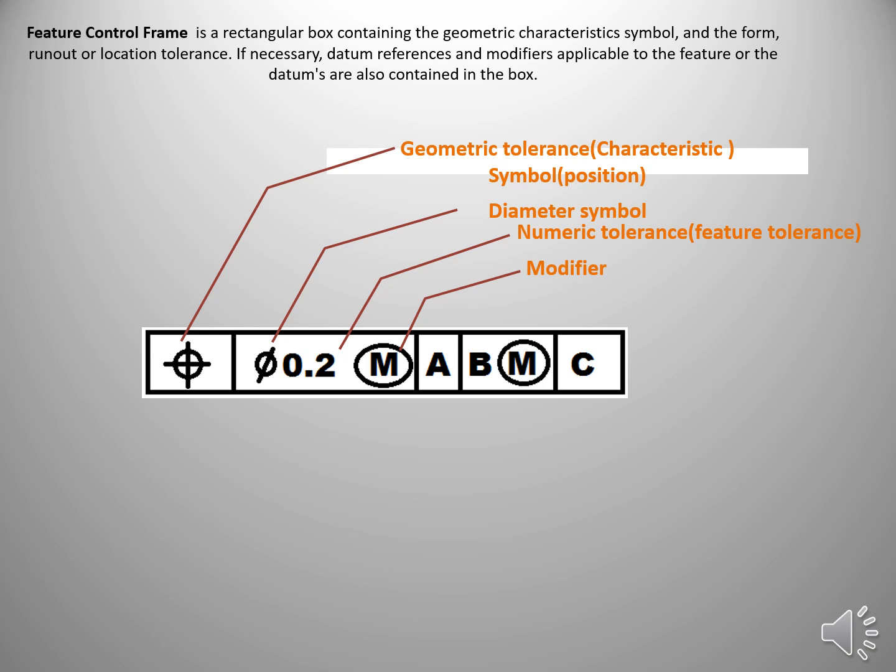This is also a big topic. In Modifier, we have different types of Modifier and we have to understand Bonus Tolerance and Maximum Material Condition, Minimum Material Condition, etc. And remaining columns are Primary Datum, Secondary Datum and Tertiary Datum. Along with the Datum also, we can see Modifier Symbol. This is called Boundary Conditions. Let us check how we can use all these things.